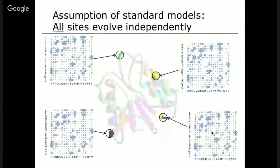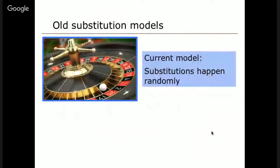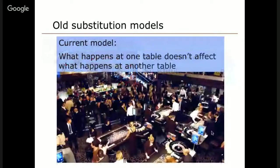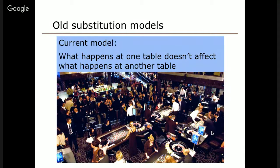Standard models assume the rate is the same throughout the evolutionary tree, and that every site evolves independently with no interactions between sites. I think of this as a roulette wheel — there's a certain probability of a substitution occurring, just as a ball falls into a hole in a roulette wheel. In a large casino, you have a bunch of these wheels, one for every location in the protein, and what happens at one table doesn't affect what happens at another table. All changes occur stochastically, independently of the amino acid's context in the protein.